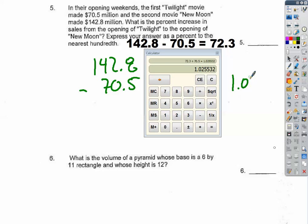One point zero two five five three one two, so that's 102.55 percent. There you go.